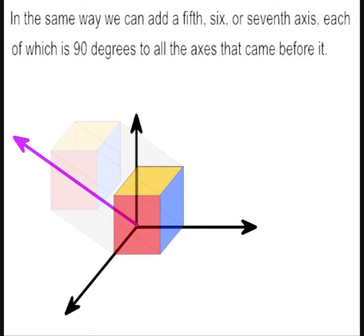In the same way, we can add a fifth, sixth, or seventh axes, each of which is 90 degrees to all the axes that came before it.